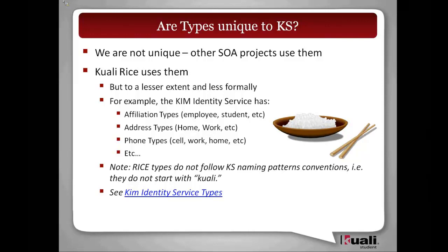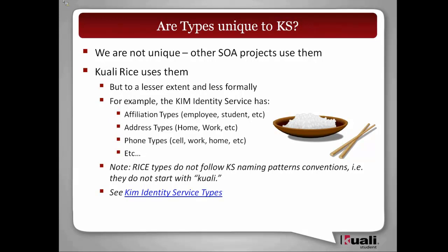Types aren't completely unique to Kuali Student. Other service-oriented projects use them, and in fact Kuali RICE does use them, though to a lesser extent and less formally. For example, the identity management services in RICE have affiliation types, address types, and phone types — all to allow you to define additional addresses or phone types that didn't exist when they first designed the system. We've just taken them a step further — we seem to have them on almost every object, whereas RICE has types on maybe a quarter of their objects.